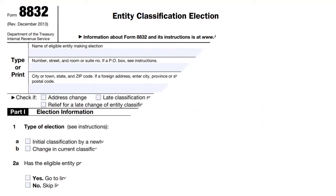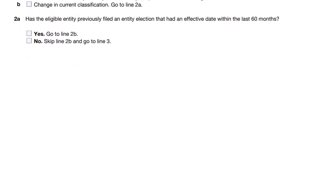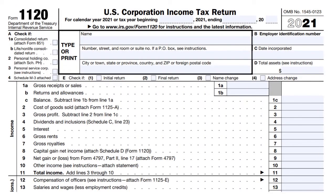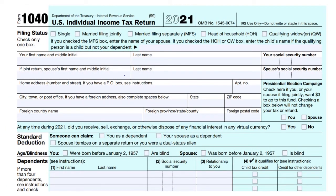If you file as a C corporation, you need to file Form 8832 to confirm your tax status, and you report all business income on IRS Form 1120 — that income will be taxed at the corporate rate. If you have no income, you leave the income section blank on Form 1120. Keep in mind, any dividends or salary you earn from your single member LLC will also be taxed as personal income on IRS Form 1040. For this reason, single member LLCs rarely elect to file as C corporations.